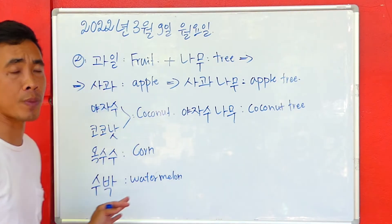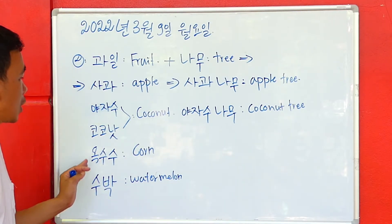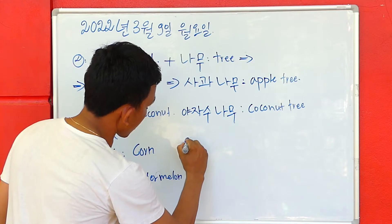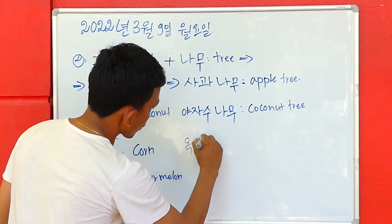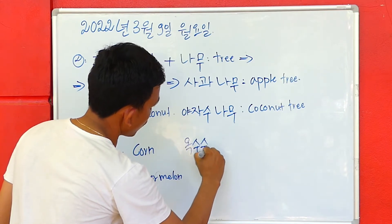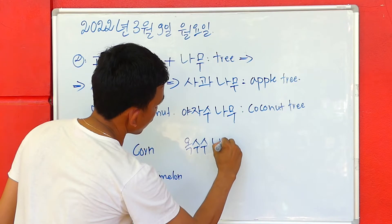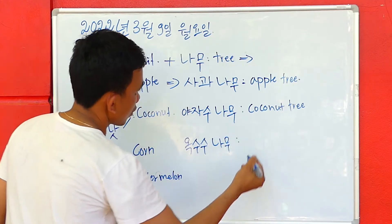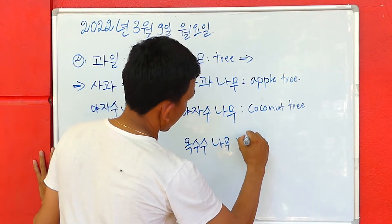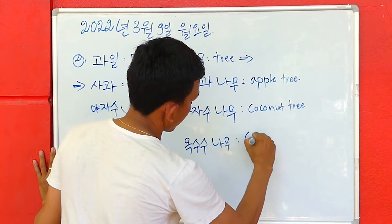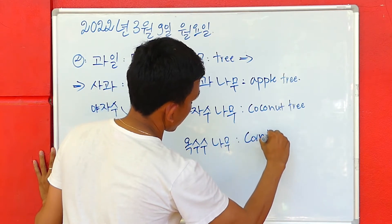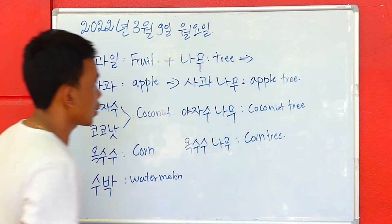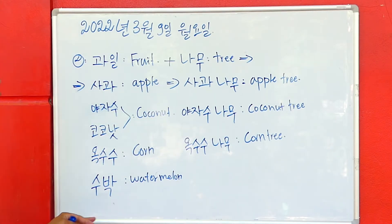You can understand what that means. And the next one is Opsusu. Opsusu, you can say Opsusu. Opsusu Namu means corn tree. No — corn. Okay?